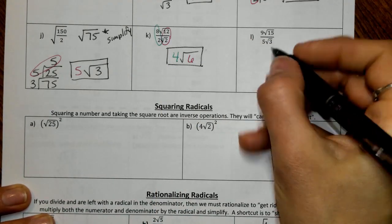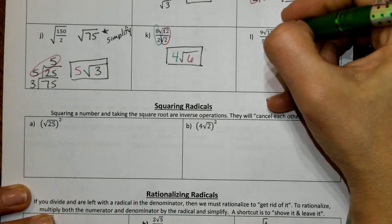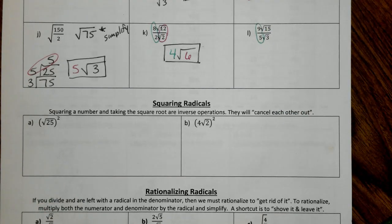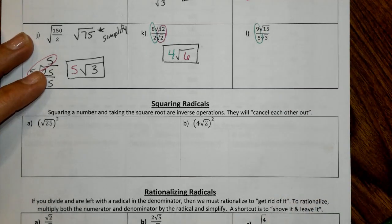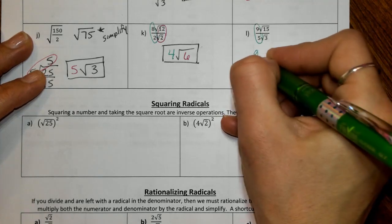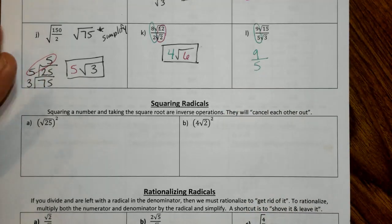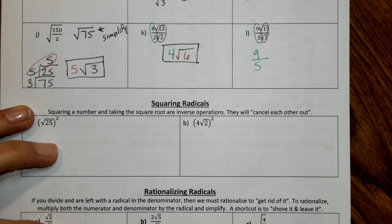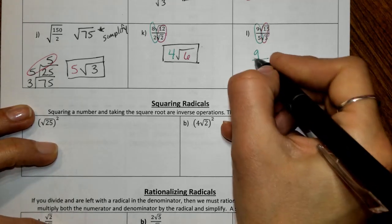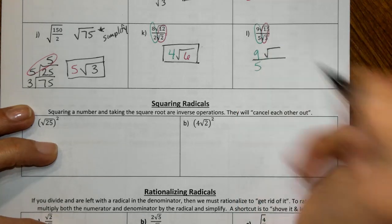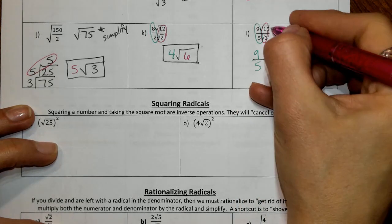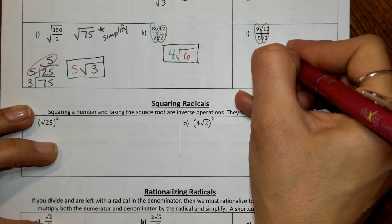The next one, we're going to have 9 divided by 5. What I need you to notice is 9 cannot be evenly divided by 5. What I want you to do is leave it as 9 over 5. When you divide the radicands, these will divide. The radical sign is going to remain in the numerator, and then we divide the 15 by 3 to get 5.